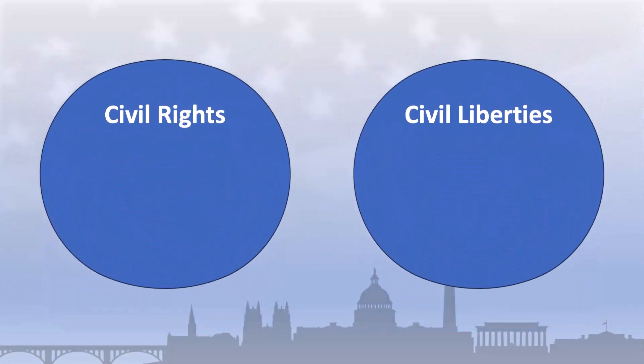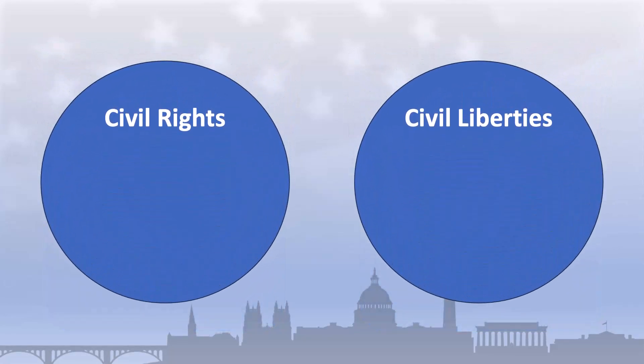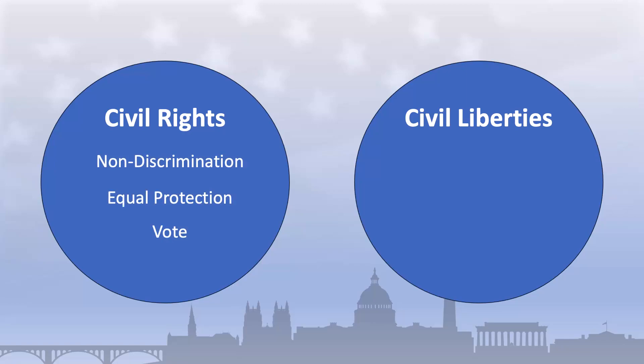Examples of civil rights might include freedom from discrimination, equal protection under the law, or the right to vote. Examples of civil liberties might include the right to free speech, the right to bear arms, or the right to privacy.